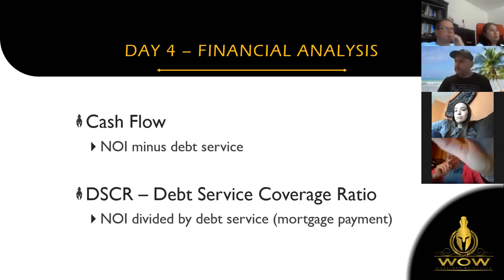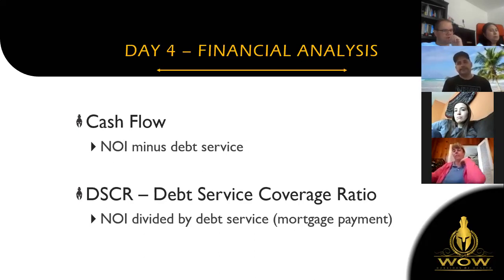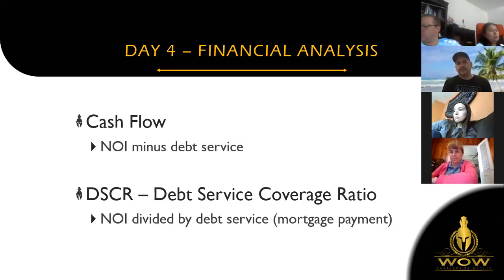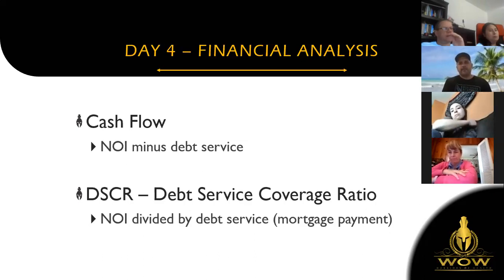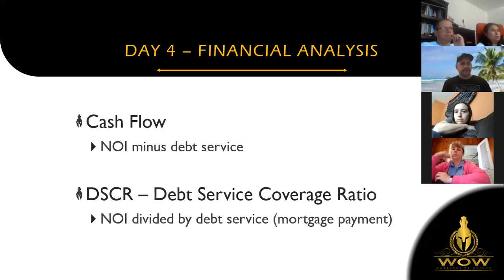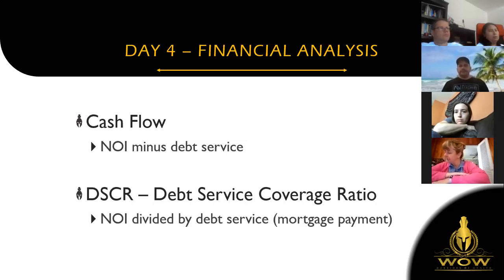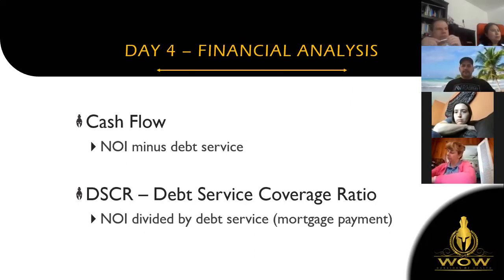Debt service coverage ratio is the relationship between how much net income the property is bringing in compared to how much the mortgage payment is. Your lender, when they see you have net operating income coming in, wants to make sure it's sufficient to pay the mortgage. They want to make sure you have enough above and beyond the mortgage payment that even if something comes up unexpectedly, you still have the ability to pay the debt service. It's common to see a lender say they have a minimum DSCR of 1.25.